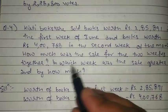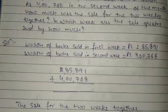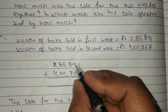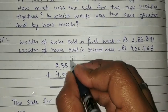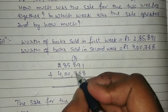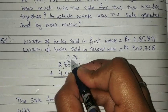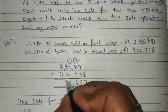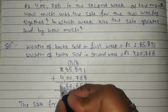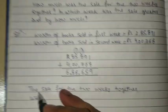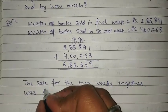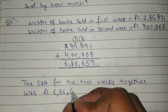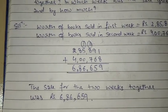To find total sales for both weeks, we add the two amounts. Working through the addition: ones digit 1 stays; 9 plus 6 gives 15, write 5 carry 1; 8 plus 7 plus 1 gives 16, write 6 carry 1; 5 plus 1 carry gives 6; then 8, 0; 2 plus 4 gives 6. So the total sale for the two weeks together was rupees 6,86,659.